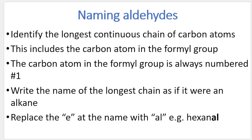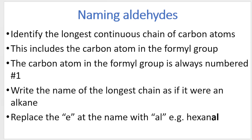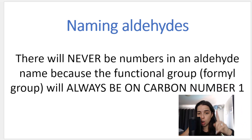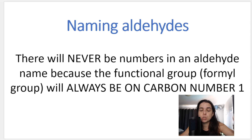How do we name an aldehyde? Just like we've been doing for all the other groups, you identify the longest continuous chain of carbon atoms — this is always step number one. This includes the carbon atom in the formyl group, which must be part of the longest chain. The carbon atom in the formyl group is always named carbon number one. Write the name of the longest chain as if it were an alkane, but replace the E with AL. Because the formyl group is always at the end of the chain on carbon one, we do not put numbers in the name.